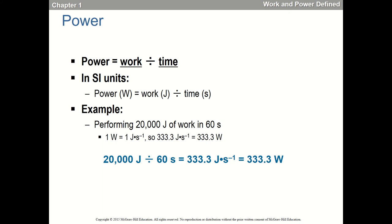Moving on to power. Our main unit is watts, which is just joules per second. Have this memorized: power equals work over time. Time is almost always going to be seconds, and work is in joules — force times distance. So if someone performed 20,000 joules of work in one minute or 60 seconds, that is 333 and a third watts. Whenever we get on cycle ergometers, it'll be important to know wattage — typically somewhere between 50 watts and up to about 500.